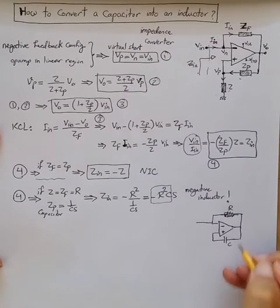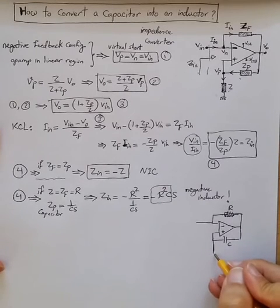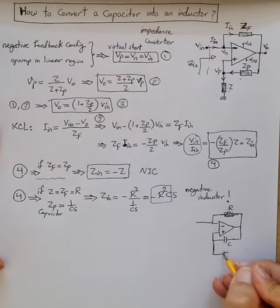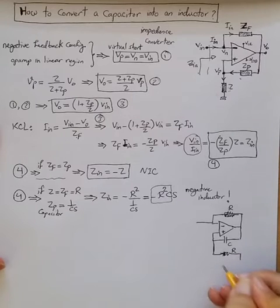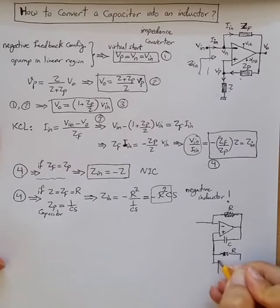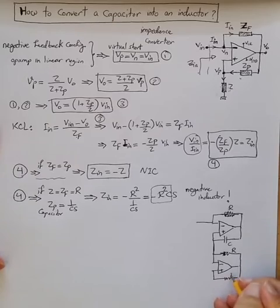And instead of Z, I'm going to put another one here. So I'm going to put one with a resistor R and a resistor R.